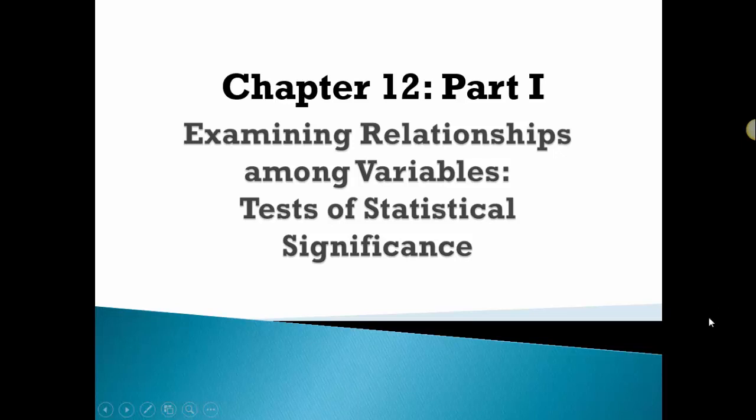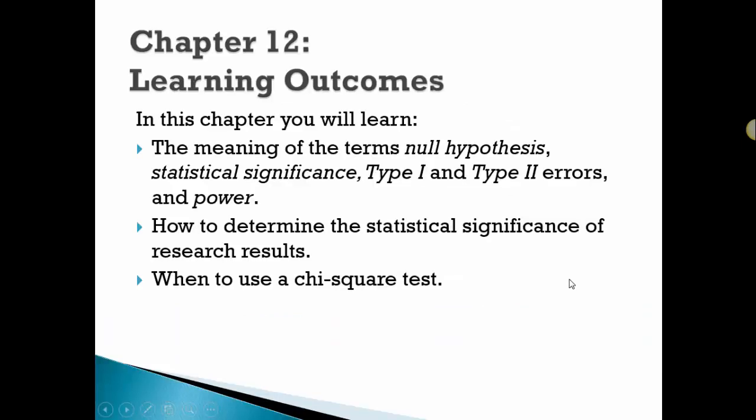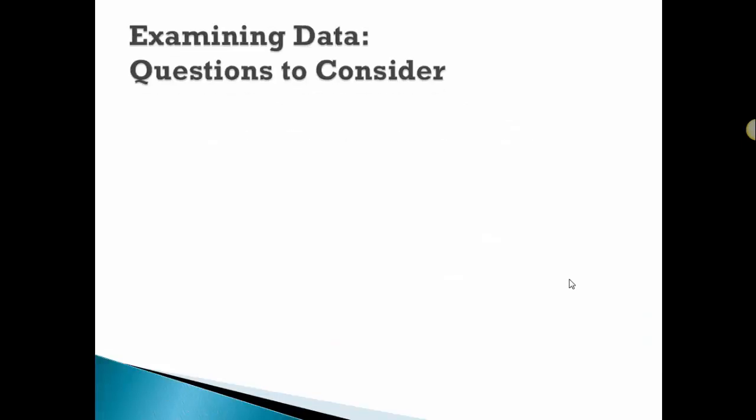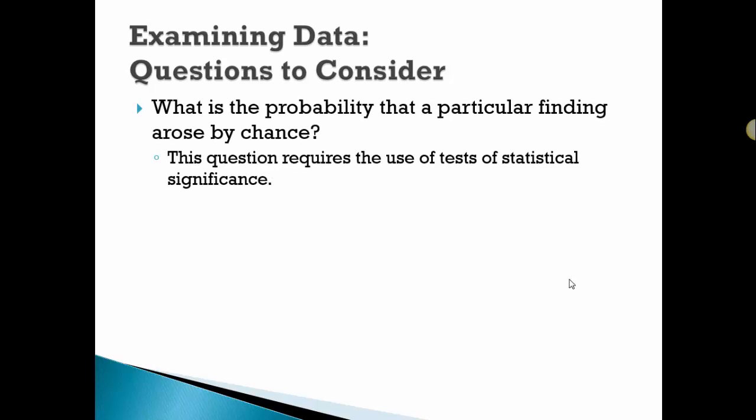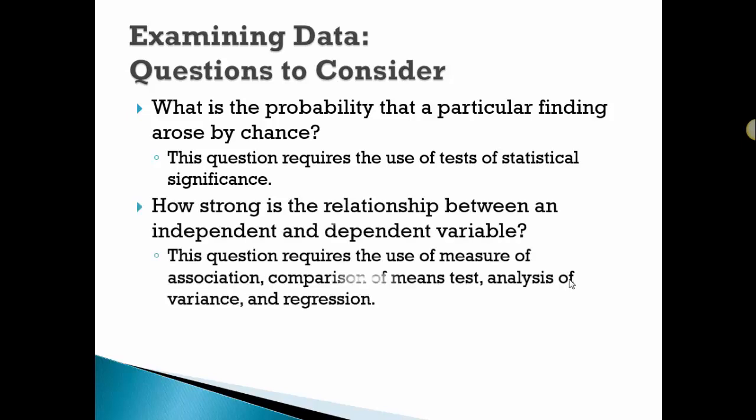In chapter 12, we're going to learn about tests of statistical significance. There's a lot of new terminology in this chapter, so let's take a look at some questions that you might think about when you collect information or data. What's the probability that a particular finding arose by chance? This really requires us to use tests of statistical significance.